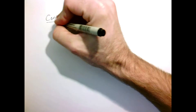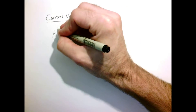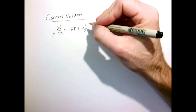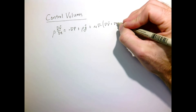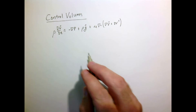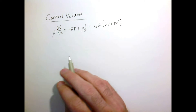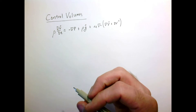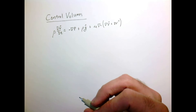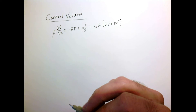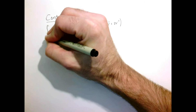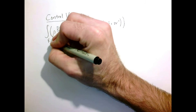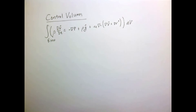Today we're going to discuss control volumes. Let's start with our trusty Navier-Stokes equations written in this form. When we derived this equation, we started with an integral form, but our region of integration moved with the fluid — it was a material region. Now we want to cast this equation in integral form, but for a fixed region of integration.